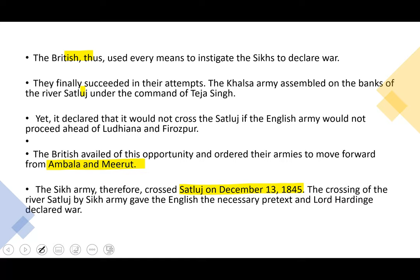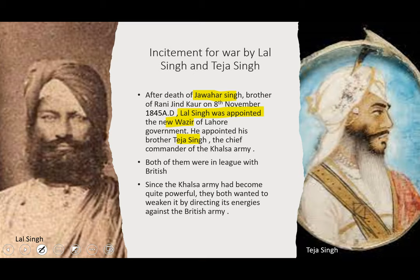British were using every means to instigate the Sikh to declare war. Even when the Sikh crossed River Satloj, they declared they would not cross further if the English army would not proceed ahead of Ludhiana and Ferozpur. Since British were already prepared for war, they ordered their armies to move forward from Ambala. The Sikh army crossed Satloj on December 13th, and this crossing gave the English the necessary pretext, and Lord Harding declared war.